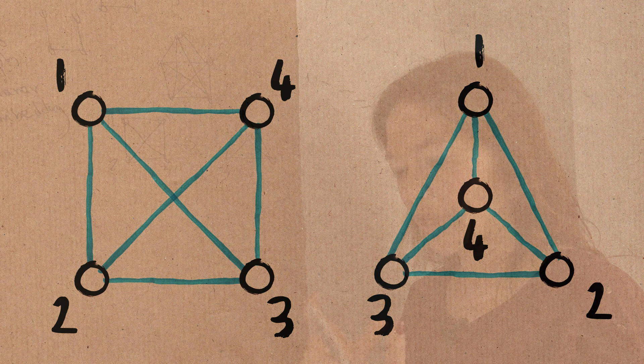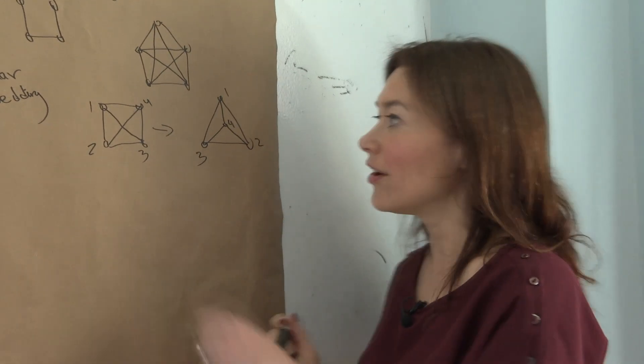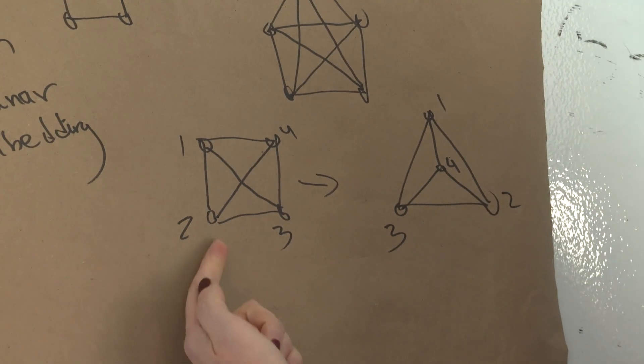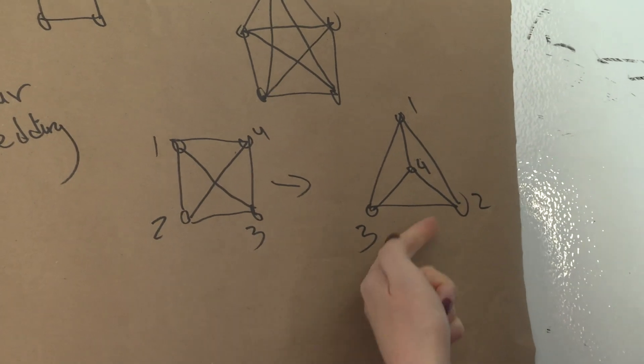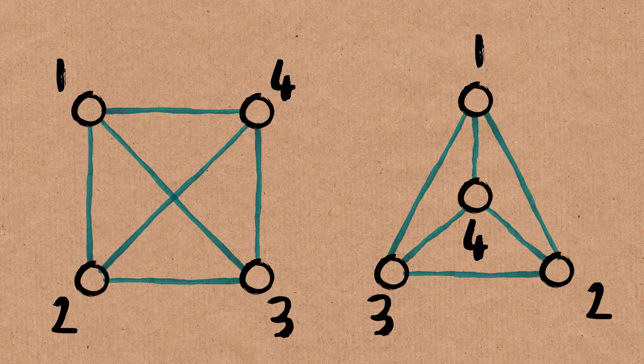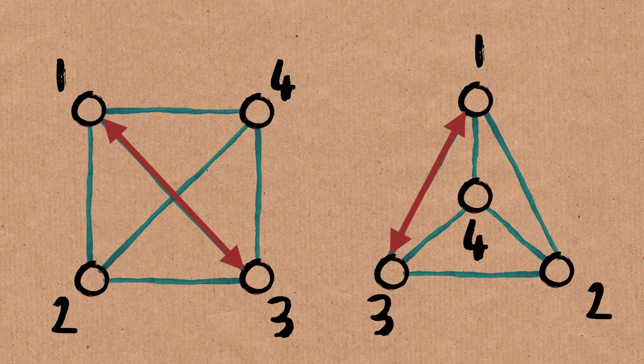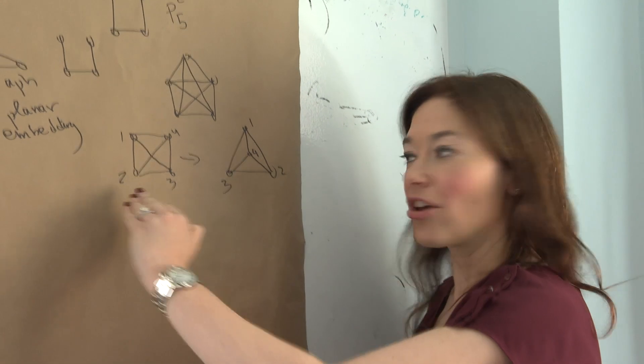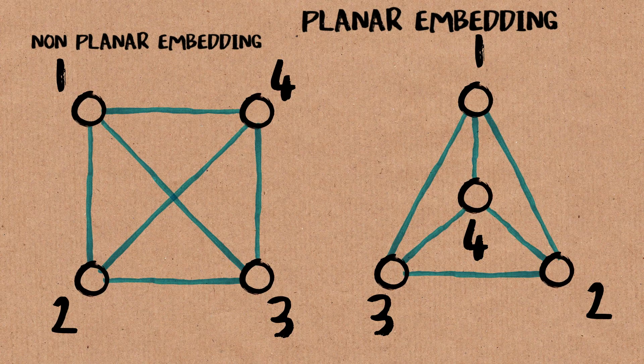So vertices are 1, 2, 3, 4, 1, 2, 3, 4. That's fair. Now here every pair is adjacent. So let's check that also here every pair is adjacent. 1 is adjacent to 2, 2 to 3, 3 to 1, 4 is adjacent to them all. So this abstract graph is the same as that abstract graph. This is a planar embedding. This is not a planar embedding.